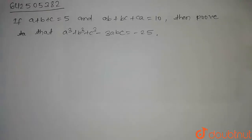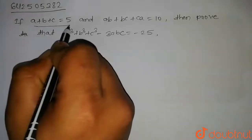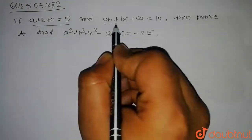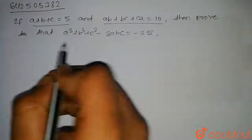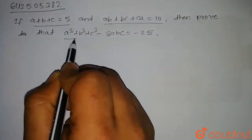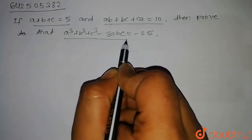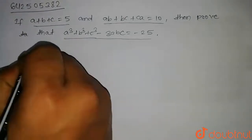Hello students, welcome to Doubtnut. Here the question is: if a plus b plus c is equal to 5, and ab plus bc plus ca is equal to 10, then prove that a³ plus b³ plus c³ minus 3abc is equal to minus 25.